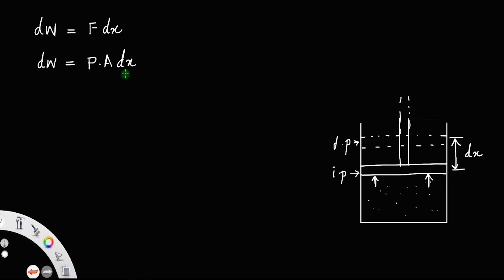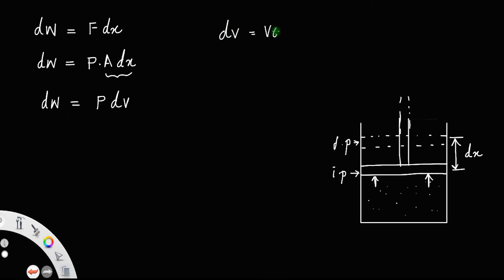Base area into height — this term, cross-sectional area of the piston times the distance or height, gives the volume. So the work done will be P into dV, where dV means the change in volume. So that is the expression for work done. Let us call this equation number one.